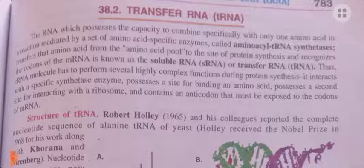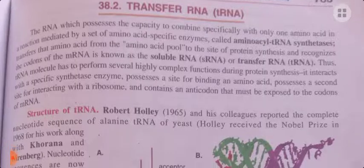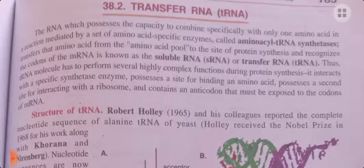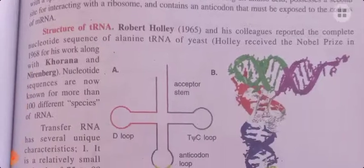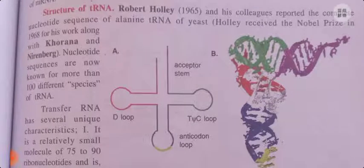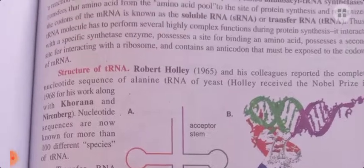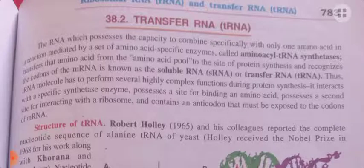tRNA has various complex functions. It interacts with the specific aminoacyl tRNA synthetase enzyme. It possesses a site for binding an amino acid — that is, the acceptor arm — where a particular amino acid will bind. It also interacts with the ribosome, because without interacting with the ribosome it cannot enter the protein synthesis site during translation. It also contains an anticodon sequence that must be exposed to the codons of the mRNA.